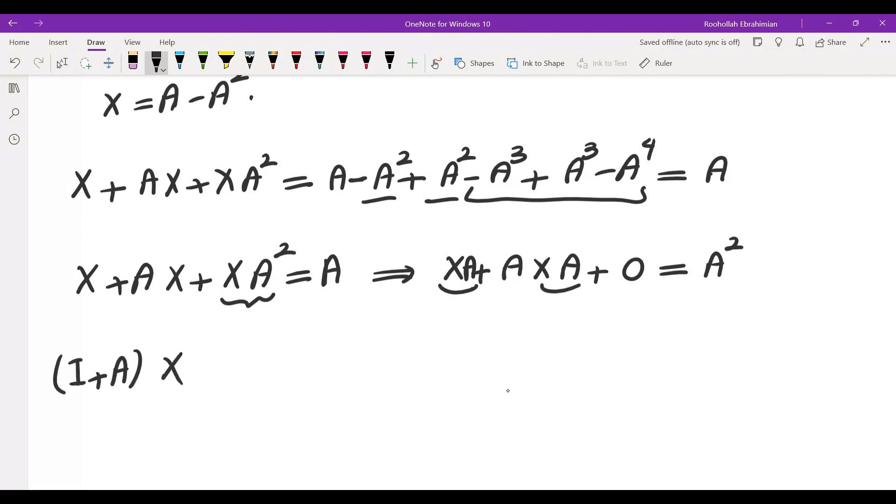Now I can do something similar to what I did for I minus A cubed: multiply by I minus A plus A squared, and that kills this term.